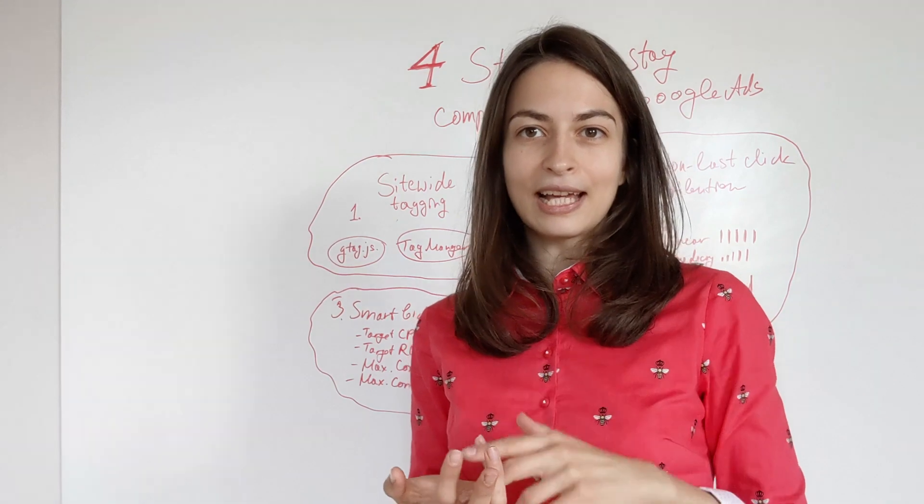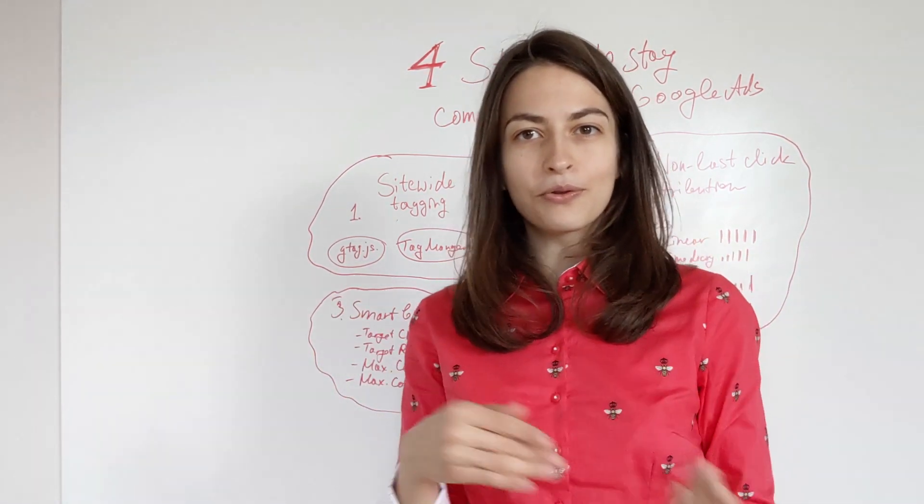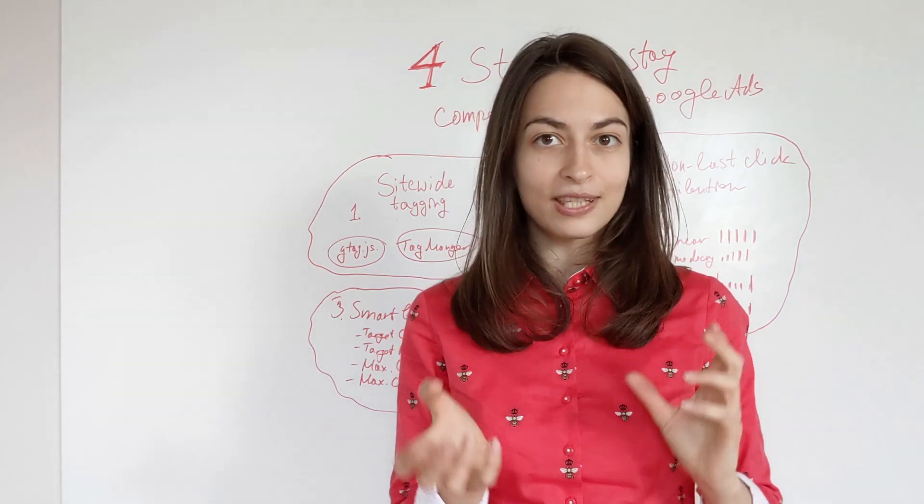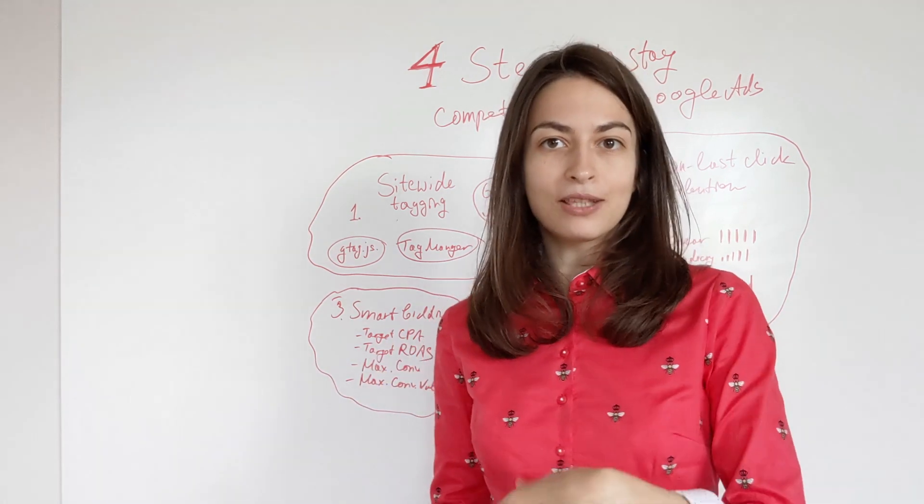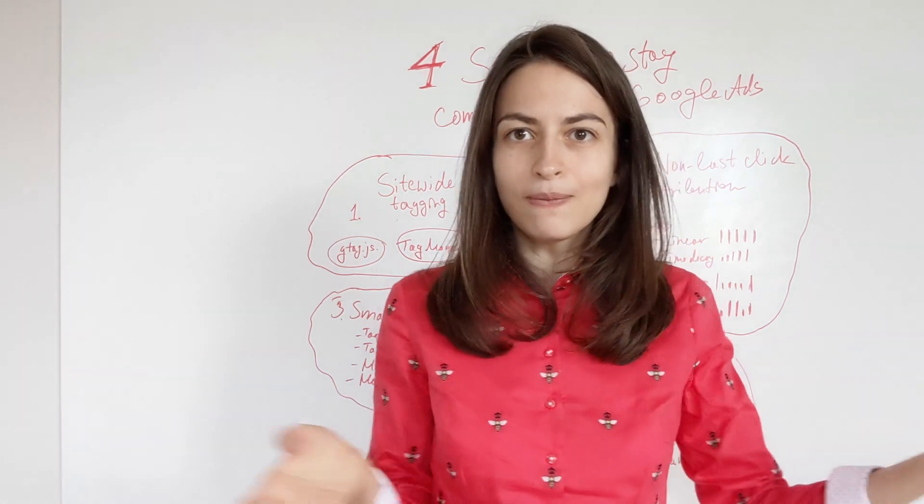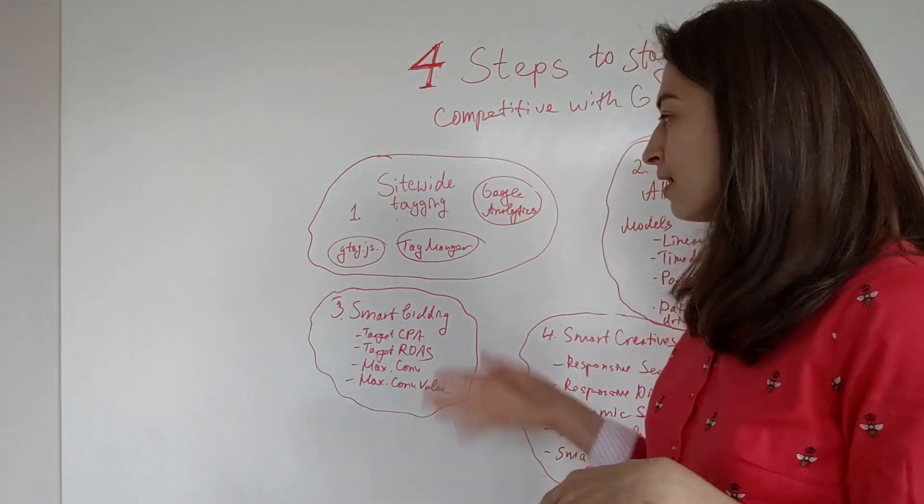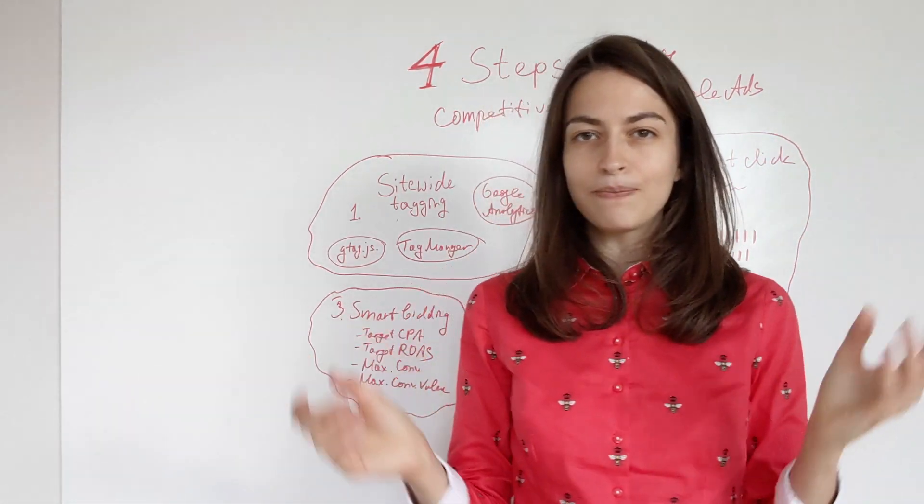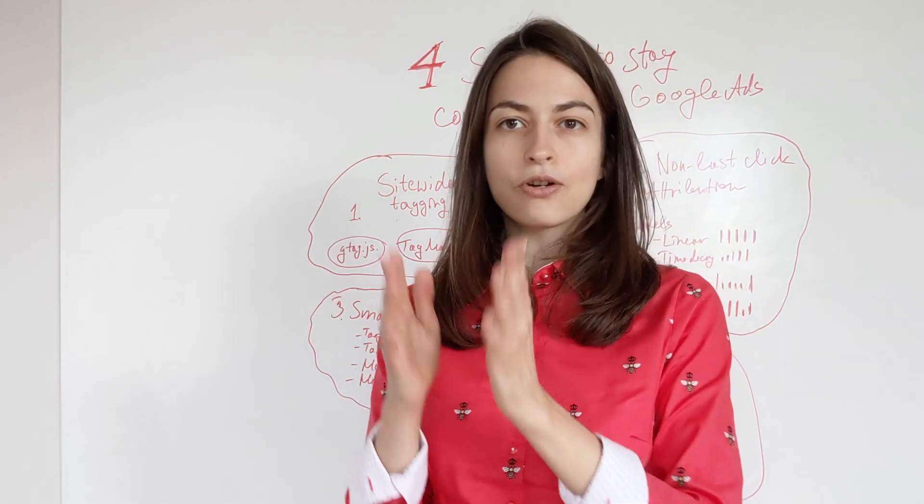And smart bidding is doing this 24/7. Plus, it's taking into account things like the user data. So let's say someone is searching but Google knows that they have been reviewing this product and they have very strong interest in actually buying this kind of product soon, so they might raise the bid. Or they see that the queries—actually they are looking just for an image, they are not looking to buy anything—so they will lower the bid. And this is based on your goal.